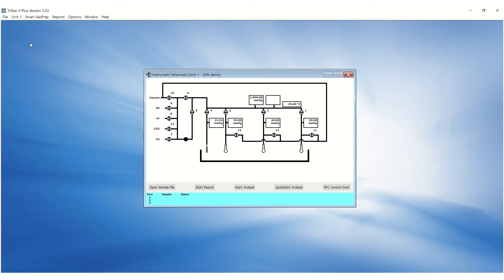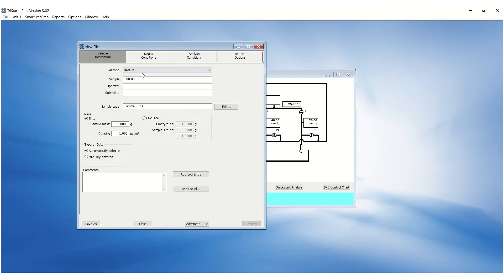In the microactive software, go to the file menu and click on new sample to create a new sample file. Under the sample descriptions tab, fill out the sample and operator fields. The clean mass can be entered or calculated based on the empty tube and sample plus tube mass.